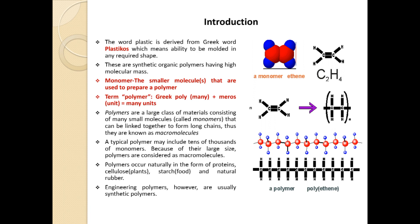The word plastic is derived from the Greek word 'plasticos' which means ability to be molded in any required shape. Plasticity property means we can change the shape of the subject into any required shape — that is nothing but plasticos in Greek, meaning plastic. These are synthetic organic polymers having high molecular mass. In general we can say that these polymers are long chain monomers, and a monomer is a smaller molecule that is used to prepare the polymers.